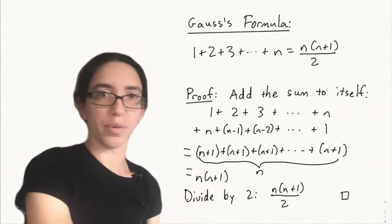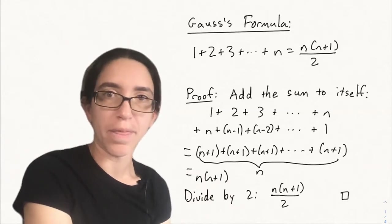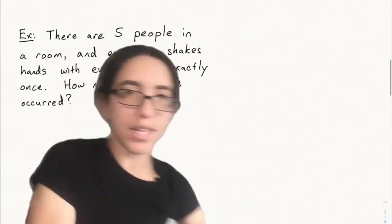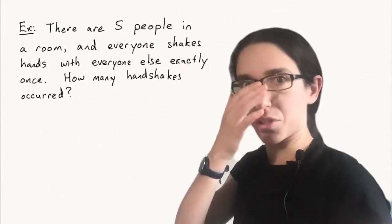So there's Gauss's formula and a nice proof of it. There are many different proofs that we'll see throughout this class. But what I want to say today is just some applications of this in combinatorics.